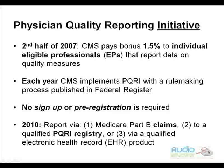CMS is actually considering limiting the claims-based mechanism of reporting these quality measures, and they're thinking about doing it after 2010. They had 22 new proposed measures for 2010, and 16 of those 22 measures could only be reported by a qualified registry. There are 13 measure groups, and five of those are registry only. The ASA did voice some concern and wrote a letter to CMS about this.